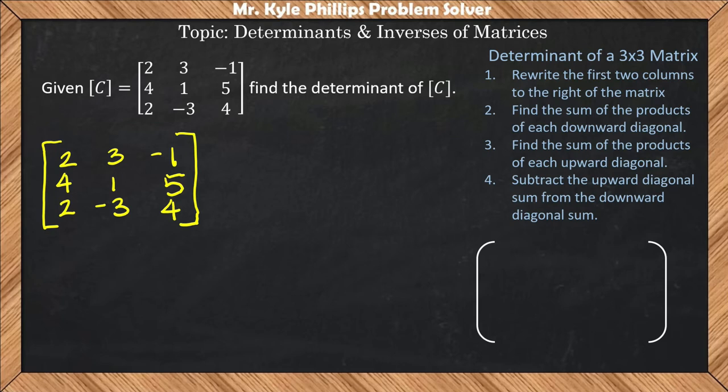So what we'll do is we'll take these first two columns, 2, 4, 2, 3, 1, negative 3, and we'll rewrite them to the right of the matrix. So 2, 4, 2, 3, 1, negative 3.